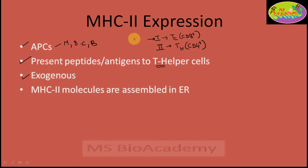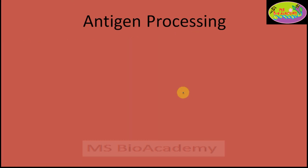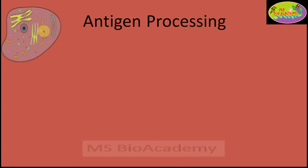Mostly class 1 presents endogenous antigens, while class 2 presents exogenous antigens. This is also an important difference between both of them, and you need to remember this because questions frequently come on it. Just like class 1, MHC class 2 molecules are also assembled in the endoplasmic reticulum. Now let's cover the antigen processing process with the help of a diagram.